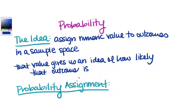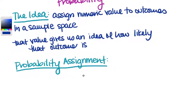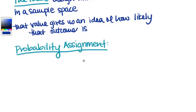One example of probability that we see all the time is a weather prediction — there's an 80% chance of rain today or a 30% chance of rain. They're talking about probabilities as percentages. We are going to talk about them as decimals. So let's talk a little more technically about a probability assignment.